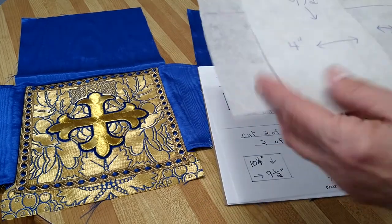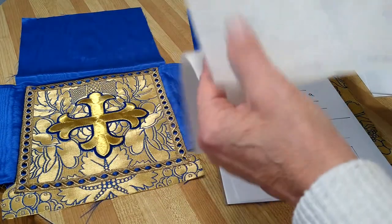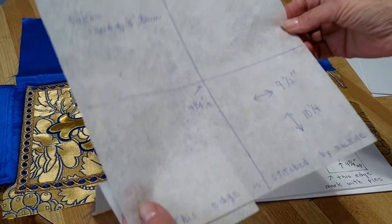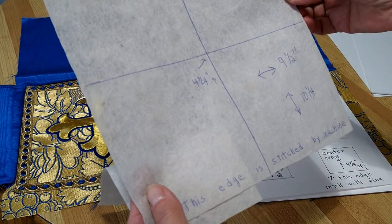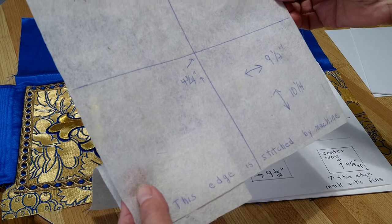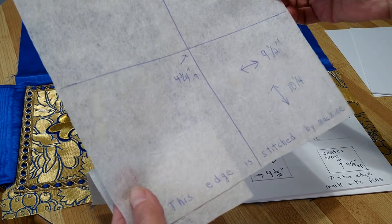This video will be about the burse. This is a pattern piece. You will need to cut out nine and a half inches by ten and a quarter inches.